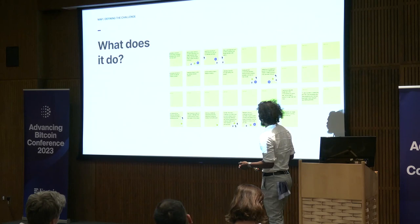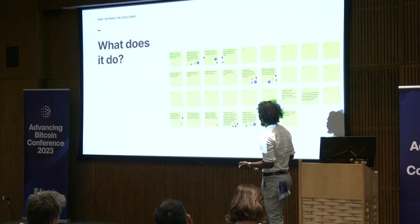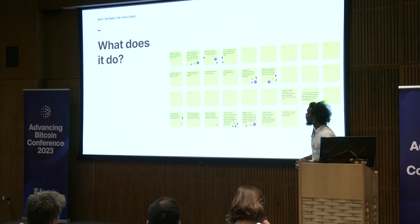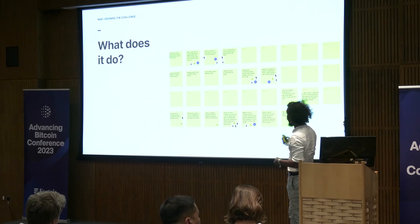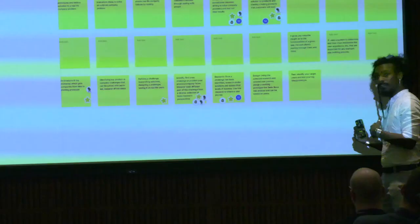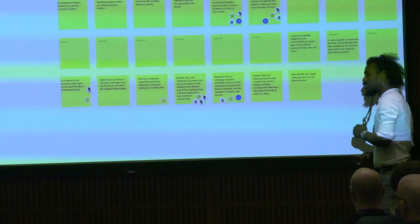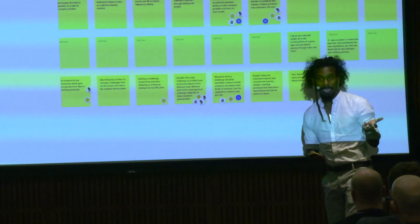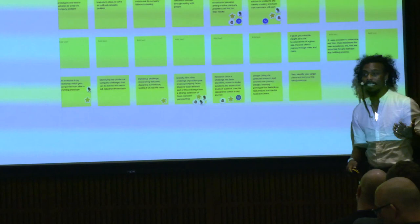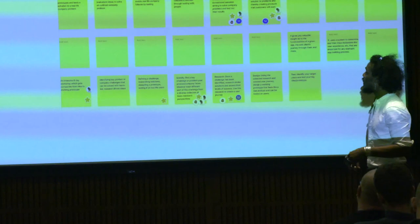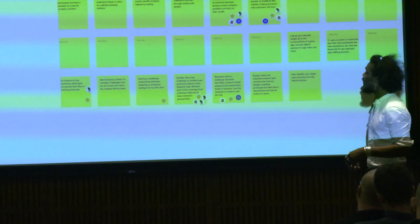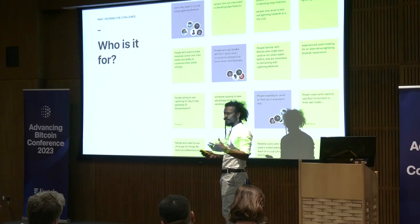Then: what does it do? What are the functionalities? We break apart all the different features of the product or project that you're launching, and use voting to come to a consensus on where the focus area will be. Even if we don't use all of these things, we can add them onto the roadmap or backlog. This right here becomes documentation about what the team thinks the project is. By the way, the project I'm going to be showing you this for is Blixt — we did some design sprints and explorations last year for that.